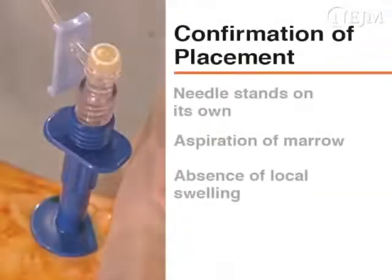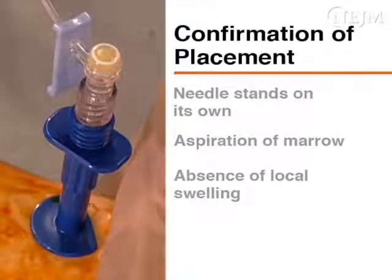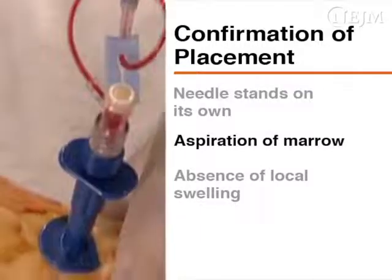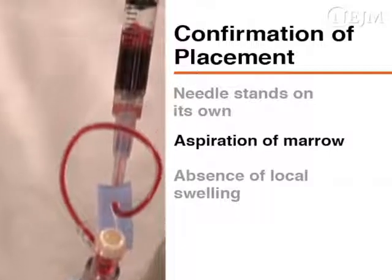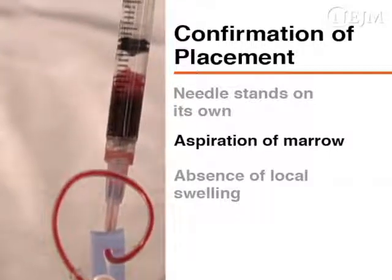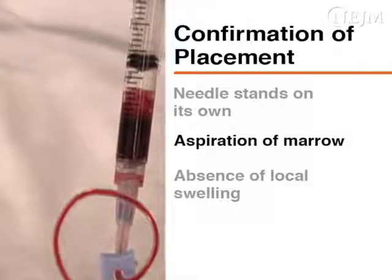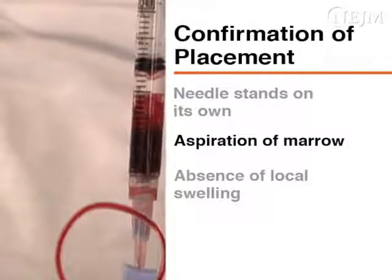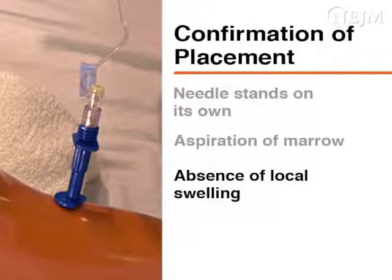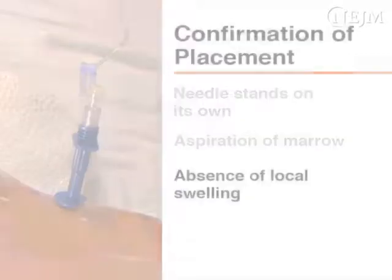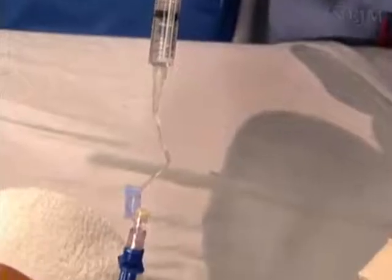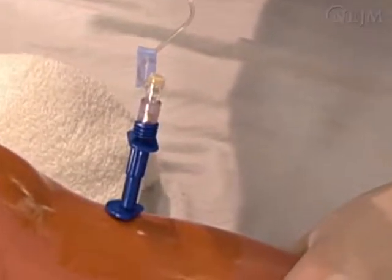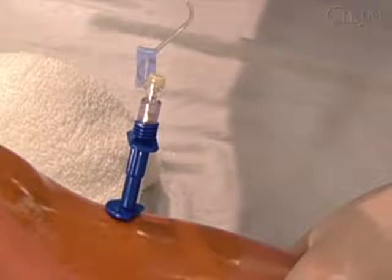A number of methods can be used to confirm catheter placement. First, the needle should stand on its own because of the lateral support of the bony cortex. Aspiration of marrow contents also signifies that the catheter is likely to be in the appropriate cavity. However, it is important to note that absence of blood return can occur even in a properly placed intraosseous catheter. Absence of local swelling at the insertion site with infusion also indicates correct placement. It is normal to sense resistance during the manual infusion into the intraosseous cannula as the bone marrow cavity is not distensible.